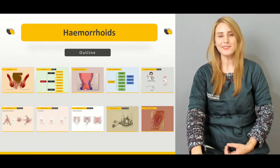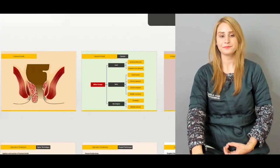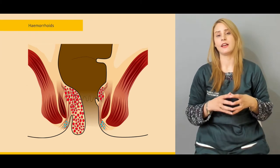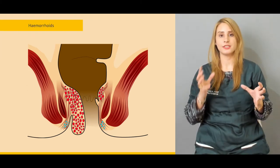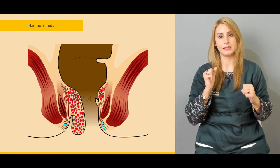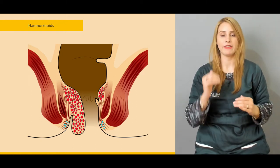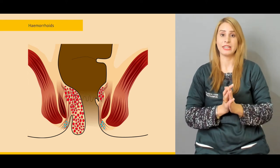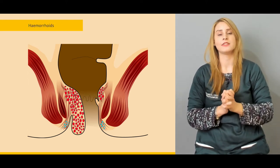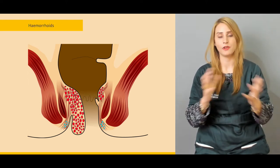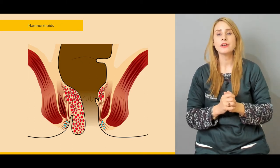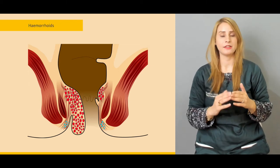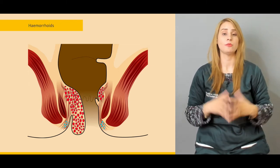So let's have the outline of today's lecture. We'll be talking about a little bit about the anatomy of the anal canal. We'll be talking about the junction between the rectum and the anus and the formation of the anorectal ring and the different components of the rectal ring. And then we'll be talking about the demarcation between the upper half of the anal canal and the lower half of the anal canal.